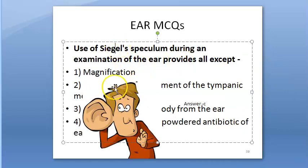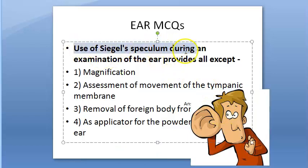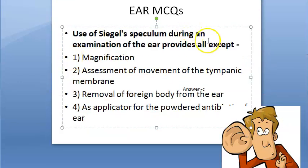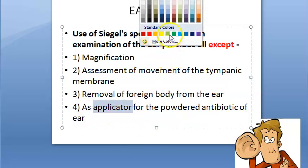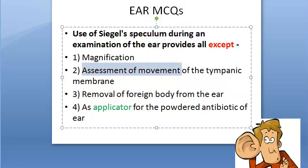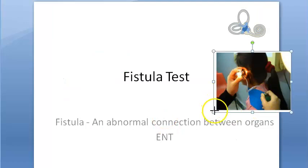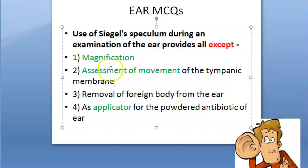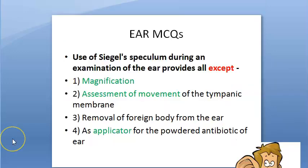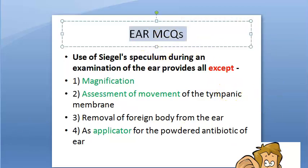Siegle's speculum during ear examination provides all except which? It can be used for assessment of movement of the tympanic membrane, magnification, and application of powdered antibiotic to the ear. However, it cannot be used for removal of a foreign body from the ear. The answer is removal of foreign body.